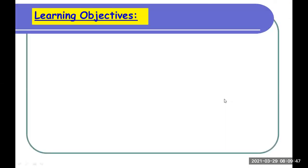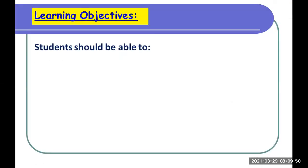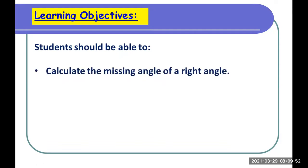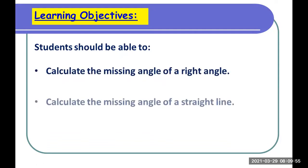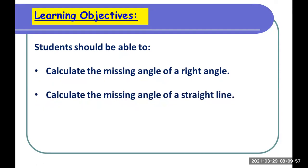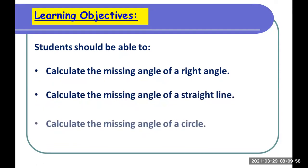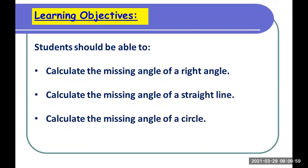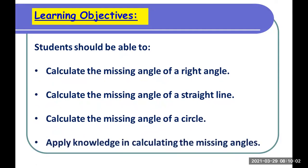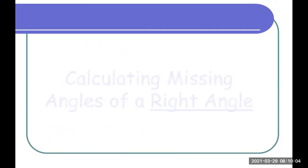First, let's have our objectives. This is our target for today. Students should be able to calculate the missing angle of a right angle, calculate the missing angle of a straight line, calculate the missing angle of a circle, and apply the knowledge in calculating the missing angles.